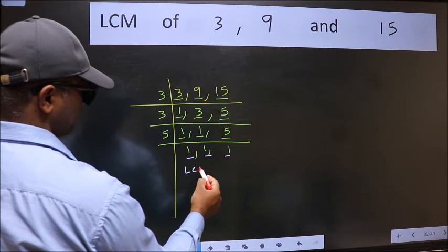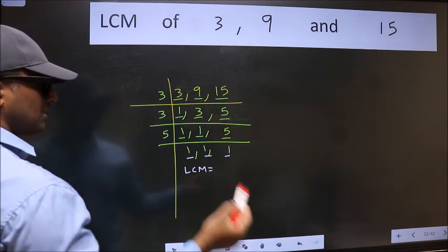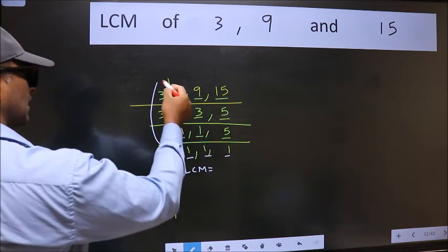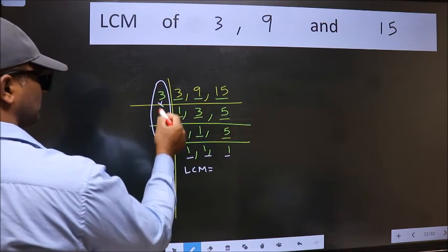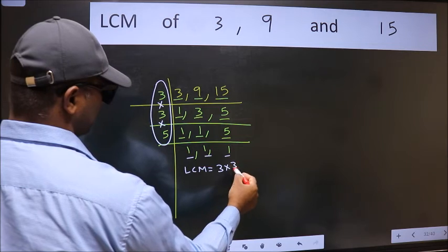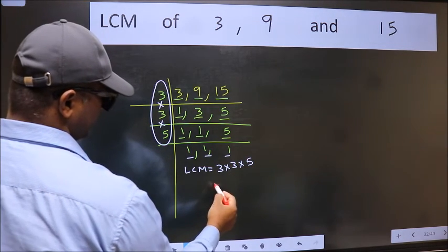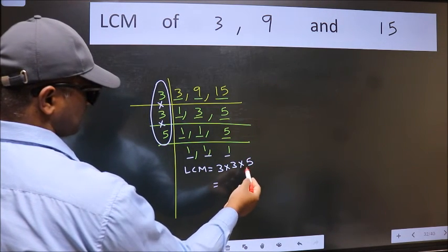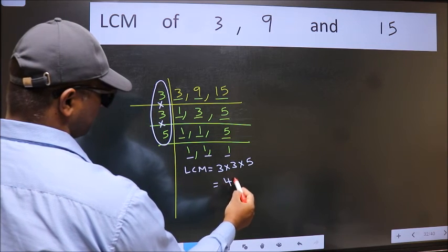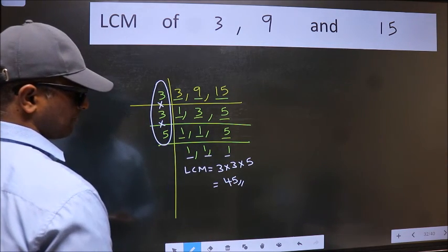So we got 1 in all 3 places. So our LCM is the product of these numbers. That is 3 into 3 into 5. When we multiply these numbers, we get 45. So 45 is our LCM.